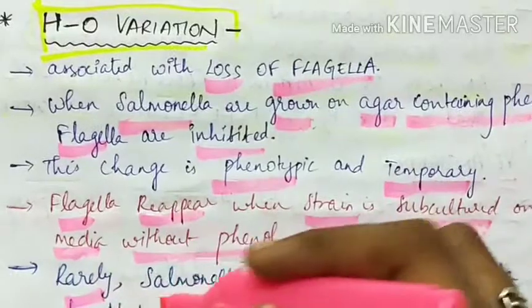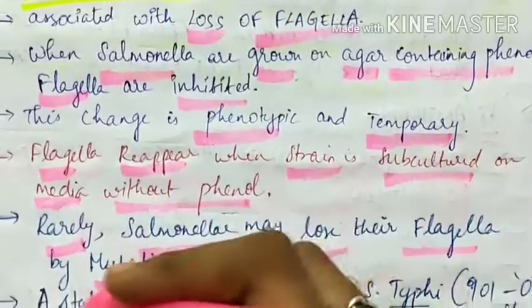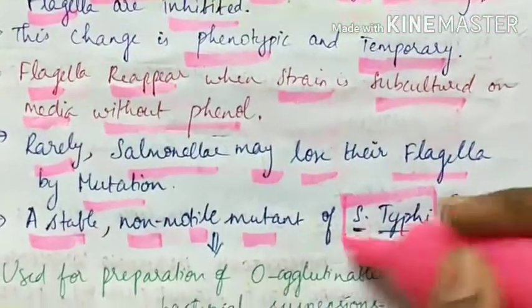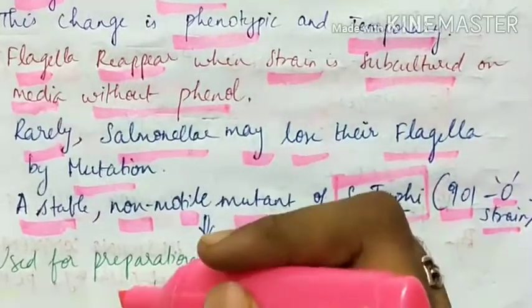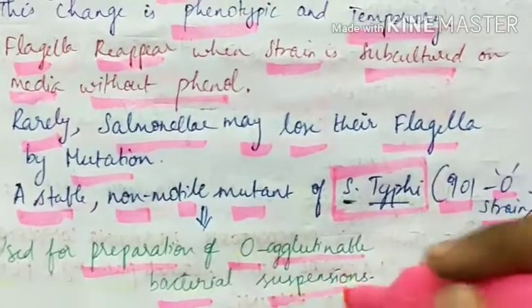Rarely the Salmonella may lose their flagella by mutation - a stable non-motile mutant of Salmonella typhi, that is the 901-O strain, is used for the preparation of O-agglutinable bacterial suspensions.